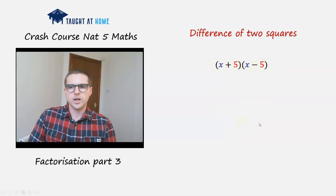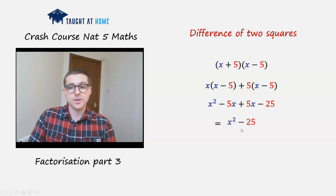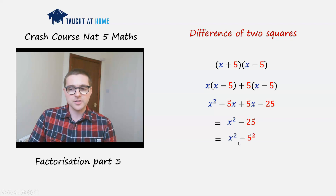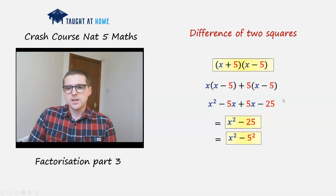Here's another example. We've got (x + 5) times (x - 5). If we were to expand the bracket, the middle terms cancel out and we'd get x squared minus 25. So this could be written as x squared minus 5 squared. This is a difference of two squares. So the idea is, when we have something along these lines and we're asked to factorise it, we recognise it's a difference of two squares and can put it into this form.